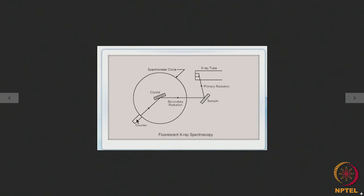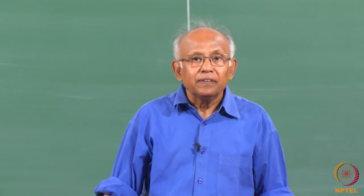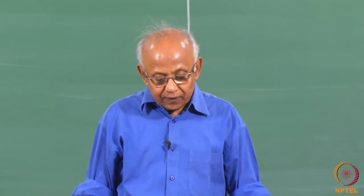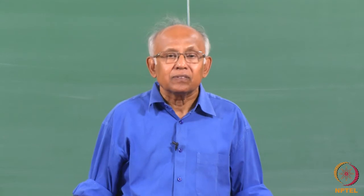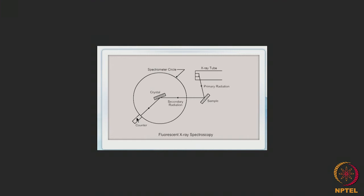It is possible to obtain the intensities of the different characteristic radiations from the sample using this analyzing crystal and counter. Then it is a question of identifying which elements produced those characteristic radiations. This is the basis of chemical analysis by the X-ray fluorescence method. We use such a setup — an X-ray tube and a diffractometer — for chemical analysis, and the arrangement is known as X-ray fluorescence spectroscopy.